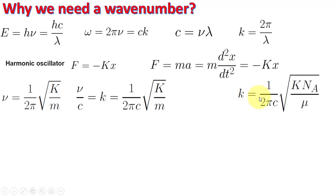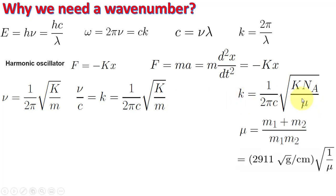To simplify calculations, we multiply the spring constant by Avogadro's number to convert masses to atomic mass units. Since we are discussing bonds between two atoms, the mass is replaced by the reduced mass μ = (m₁·m₂)/(m₁ + m₂).